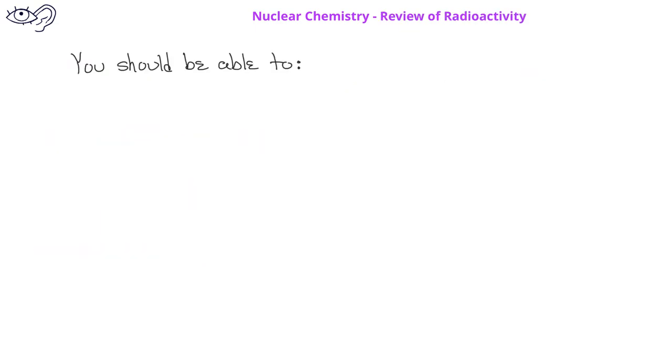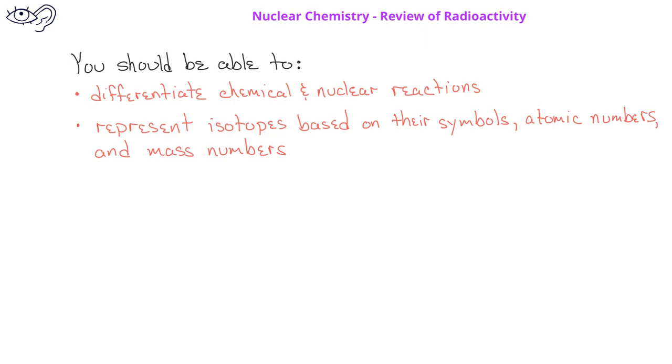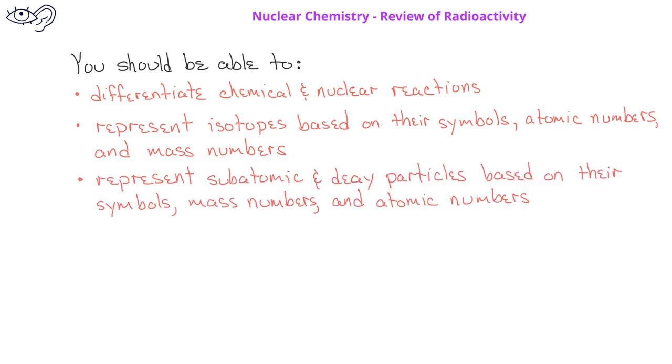After watching this video, you should be able to differentiate chemical and nuclear reactions. You should also be able to represent isotopes based on their symbols, atomic numbers, and mass numbers. Finally, you should be able to represent and recognize some atomic and decay particles based on their symbols, mass numbers, and charge or atomic number.